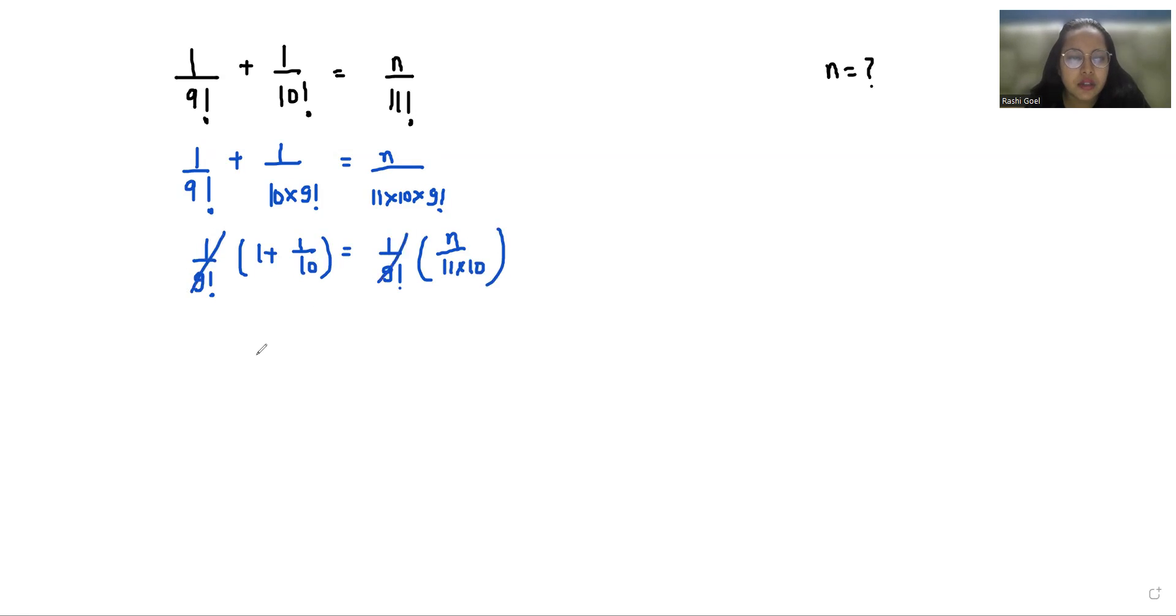We can cancel out this. So (10+1)/10 = n/(11×10). So 11/(10×11×10) = n. We can cancel out this. So n = 11×11 which is 121.